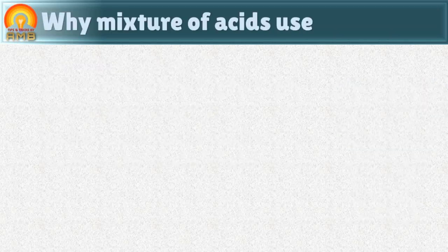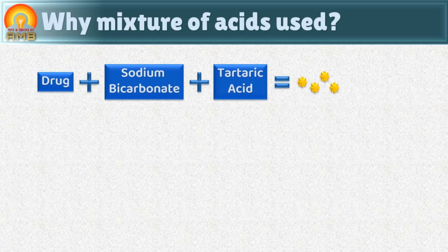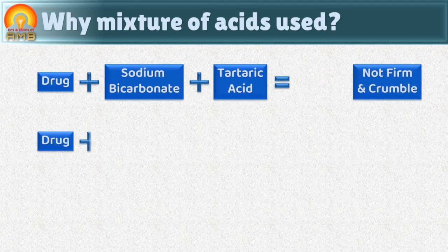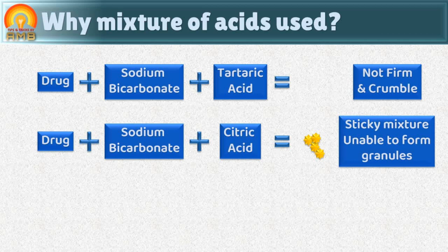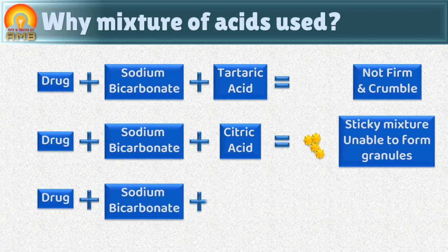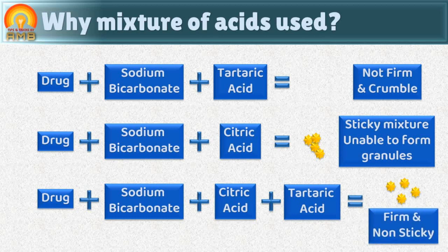Why is a mixture of citric acid and tartaric acid used rather than individual acids? When only tartaric acid is used, the resulting granules readily lose their firmness and crumble. If citric acid is used alone, it results in a sticky mixture which makes it difficult to form granules. Hence, to avoid these problems and prepare firm and non-sticky granules, a mixture of tartaric acid and citric acid is used in the formulation of effervescent granules.